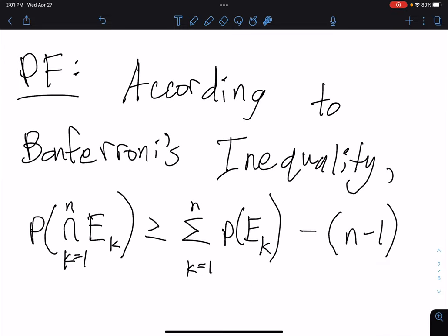So we can use Bonferroni's inequality, which says that probability of the intersection of events E1 up to EN is greater than or equal to the sum of the probabilities of E1 plus probability of E2 all the way up to the probability of EN minus N minus 1. Now this Bonferroni's inequality, this is what we proved in that first textbook problem for this homework, so I'm just going to take it for granted assuming that we already know it's true.